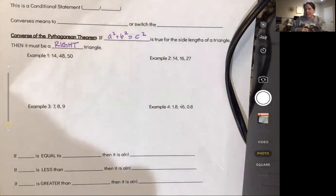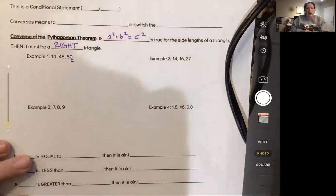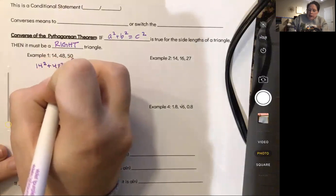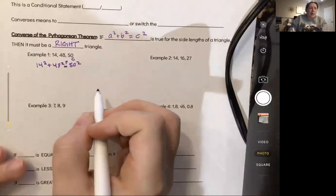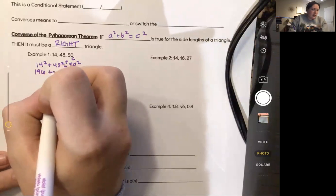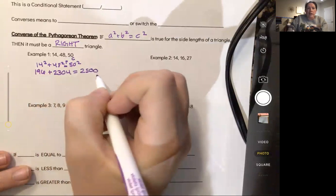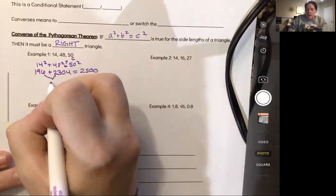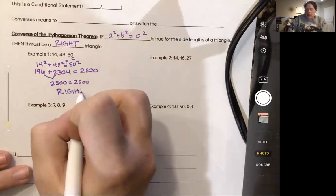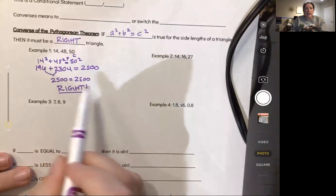Let's take a look. Remember we're always making our longest side c. So I'm looking to see, all right, 14 squared plus 48 squared, does that equal 50 squared? In this example this gets us to 196 plus 2304. Does that make 2500? When we add these two together it does make 2500. So we find out that yes, that is a right triangle because 2500 is equal to 2500.